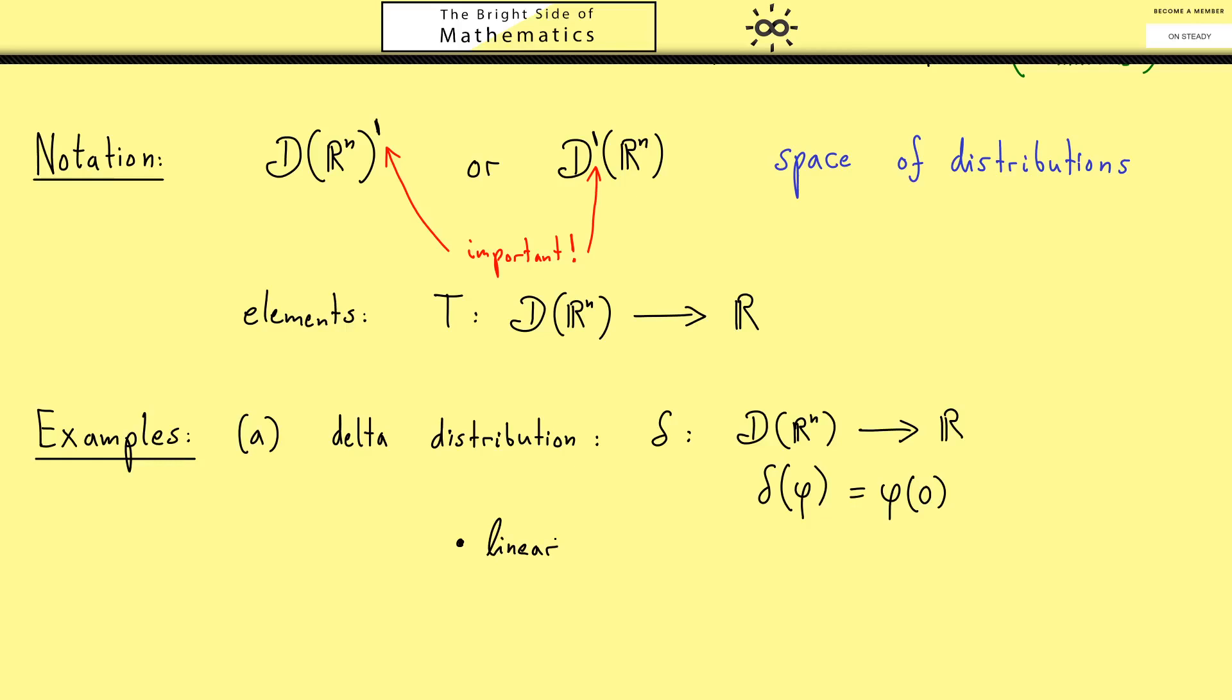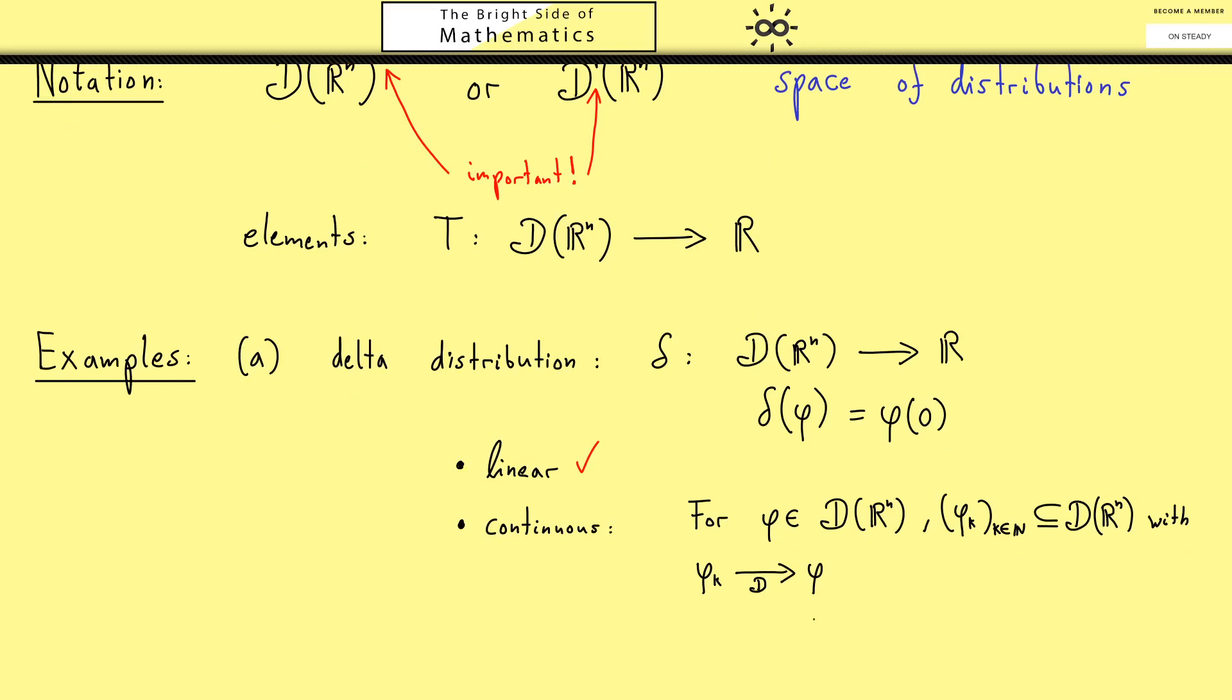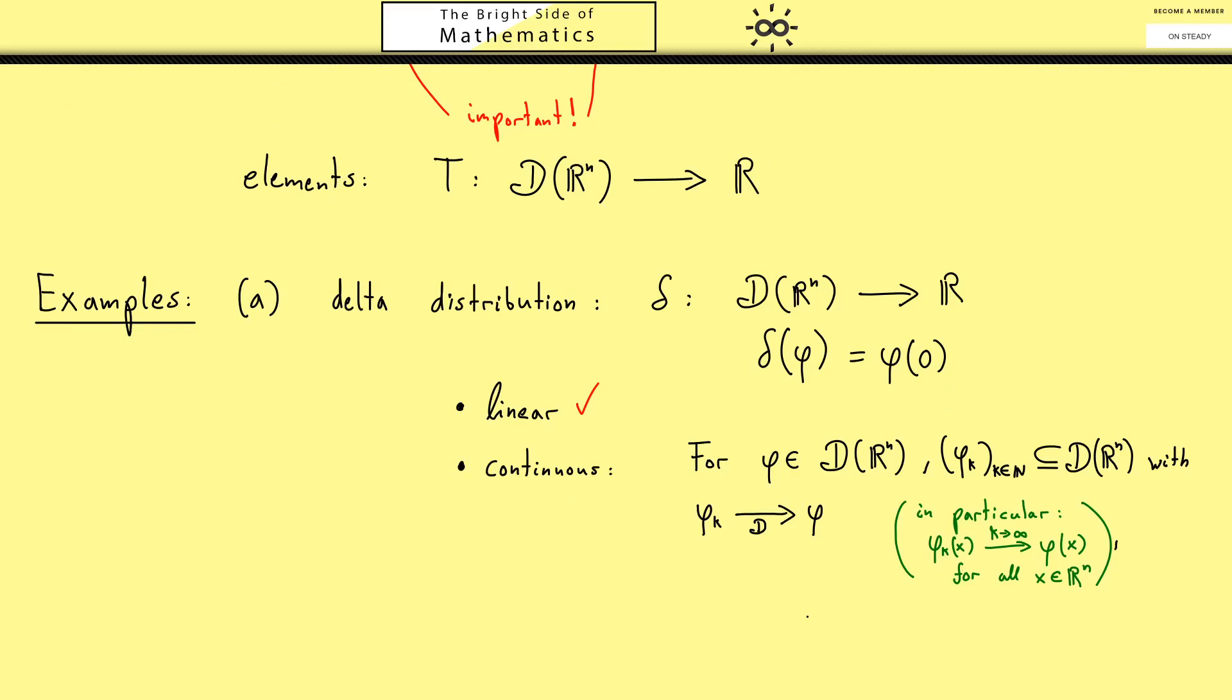The continuity is not much harder, but maybe here it's good to see it. We have the assumptions again: we take an arbitrary test function phi and an arbitrary sequence of test functions where the sequence should fulfill that it converges to phi in our D convergence. However, we already know that this special convergence is very strong. And therefore in particular we have pointwise convergence. In fact this is the only thing we really need. Because now we can look at delta(phi_k), and this one is phi_k(0) by definition. But zero is just one special point in R^n. Therefore we know this converges to phi(0).